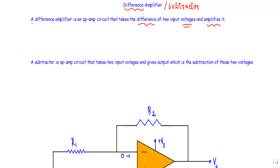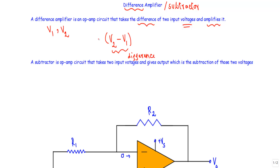In the operational amplifier, at the inverting and non-inverting terminals, we are applying two voltages: one is V1 and another is V2. The difference between V2 and V1 is V2 minus V1. The op amp will take this difference of two input voltages and amplify it by a factor of A.